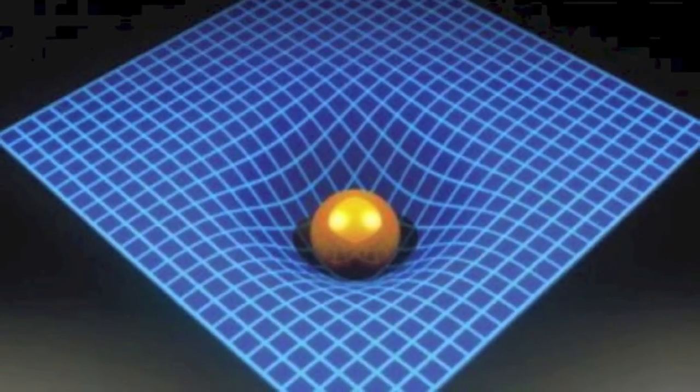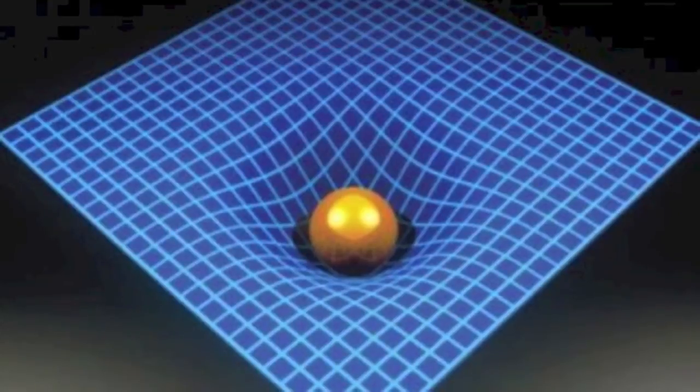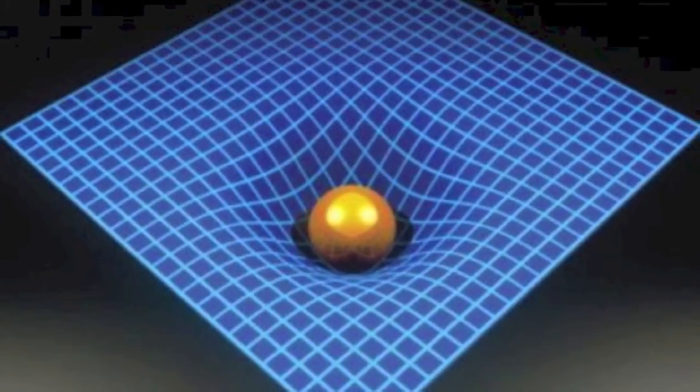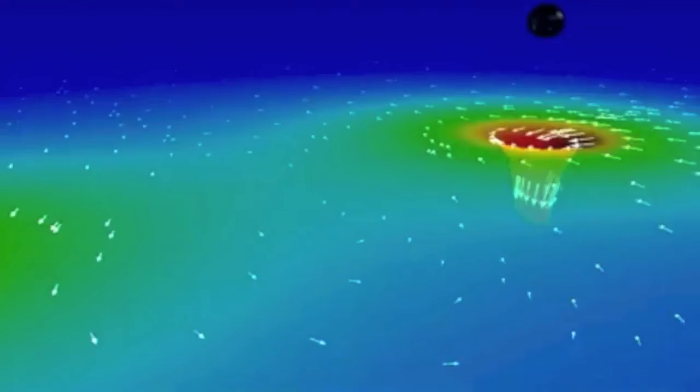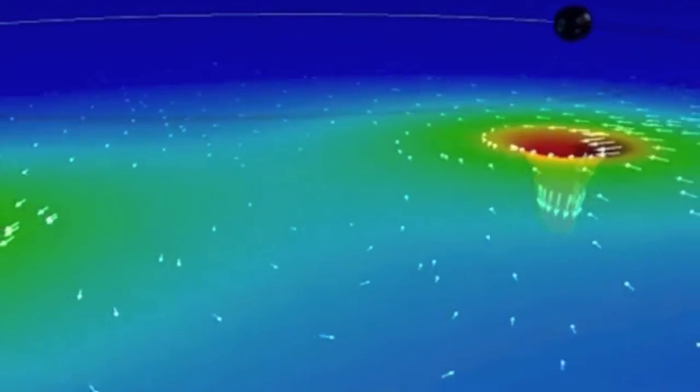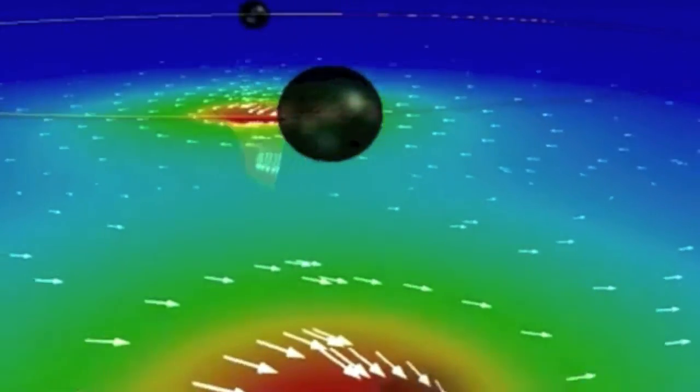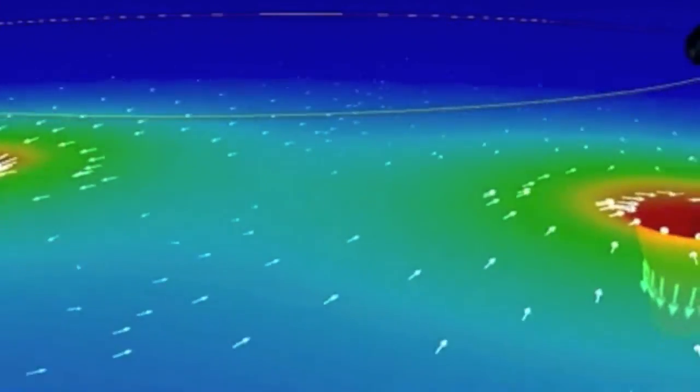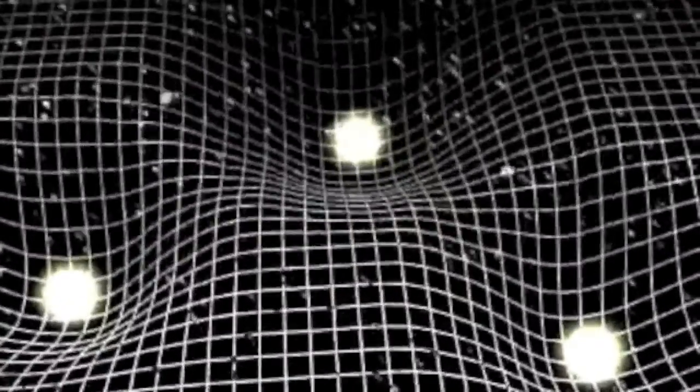In Einstein's equations of general relativity, space-time can be curved. This means that the space-time curves can twist, bend and warp into anything imaginable. Because of these Einsteinian equations, space-time now becomes a movable entity. The fabric warps and changes wherever the presence of matter.